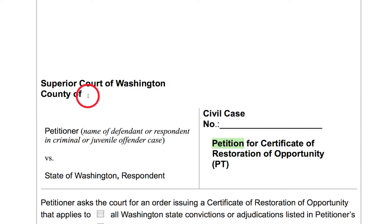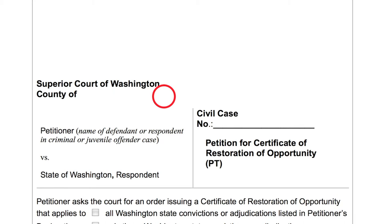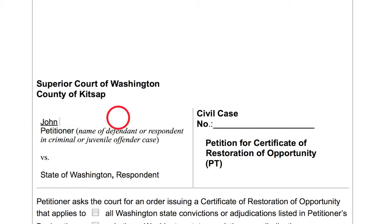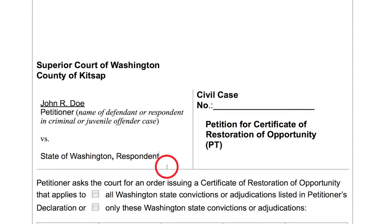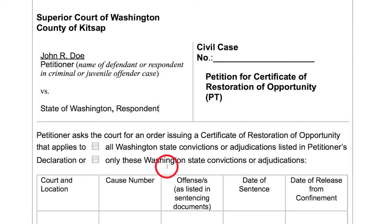You have to file in a superior court even if your conviction history includes convictions from district and/or municipal courts. You can choose to file in a county where you currently live, or in any county where you have a past conviction. Choose whichever you prefer and write the name of that county at the top of your petition. I'll be filing mine here in Kitsap County Superior Court. Then write your full name where it says petitioner. Leave the civil case number blank for now and we'll come back to it.